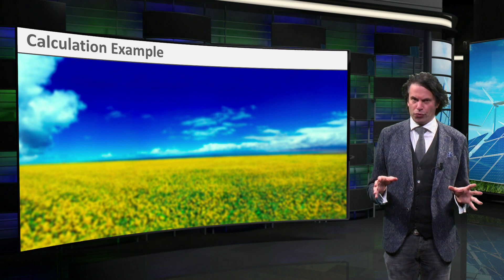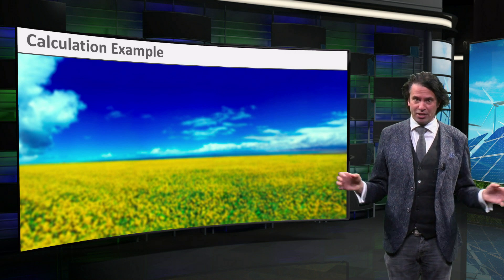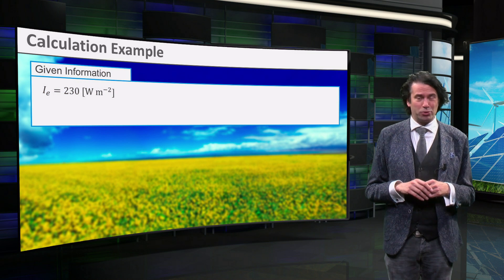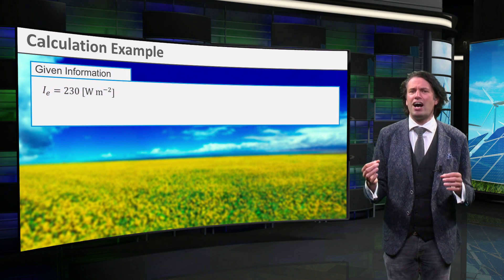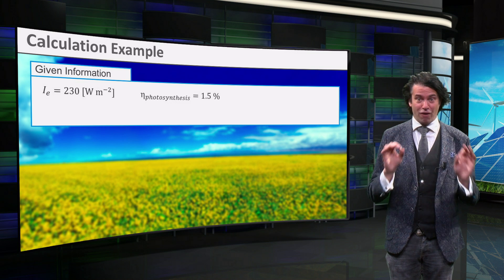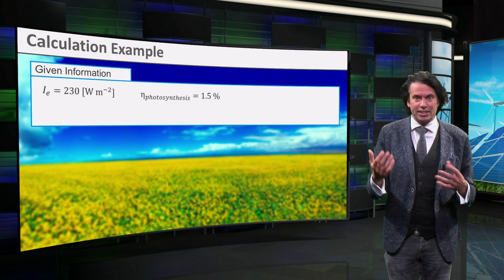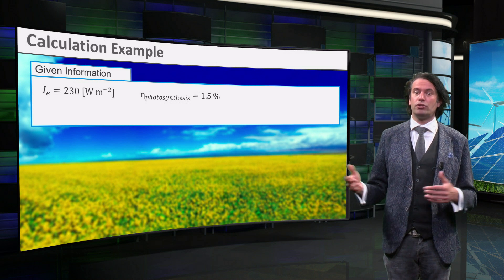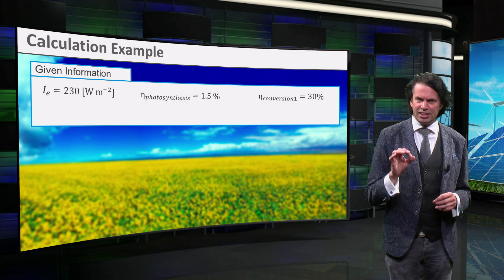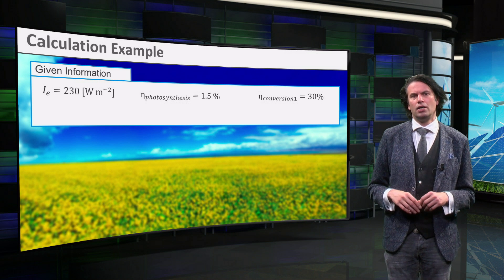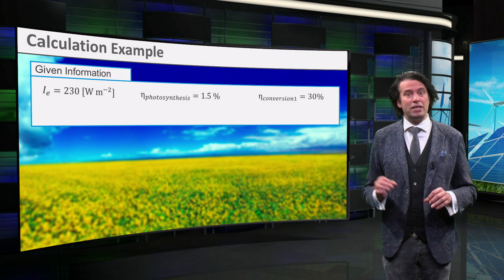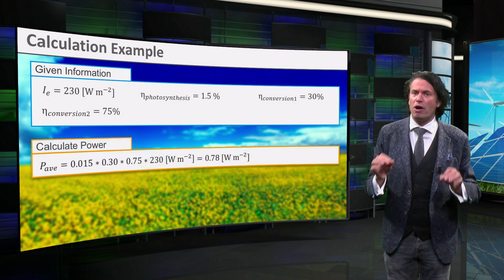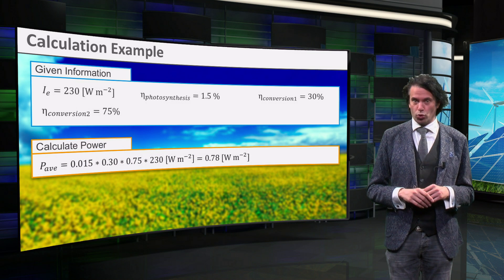Next we will consider biofuels. Brazil has a big sugarcane industry for the production of bioethanol. The average solar irradiance in Brazil is roughly 230 W per square meter. Let's assume a very high photosynthetic efficiency of 1.5%. Unfortunately, not all carbohydrates can be used for the conversion to ethanol. Only the carbohydrate sucrose can be converted into ethanol, and 30% of the chemical energy in the sugarcane is stored in sucrose. The conversion efficiency of sucrose to ethanol can be as high as 75%. Doing this simple math, we arrive at a final power density of 0.78 W per square meter.